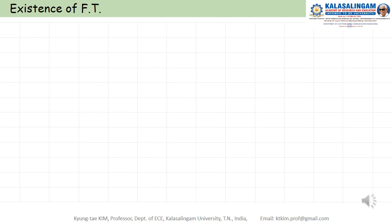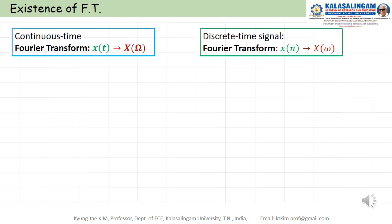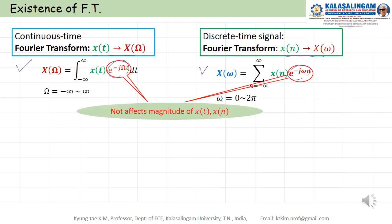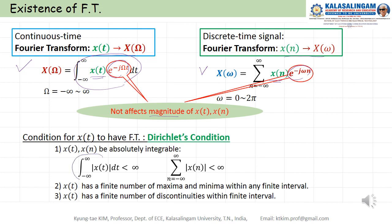Now, the existence of the Fourier transform. In the case of the Fourier transform, and in the discrete case, the formula is as shown. Pay attention to the exponential term — this term does not affect the magnitude. Therefore, in order for this term to converge, we need certain conditions. For the transform to converge and have some finite value, we need the signal to not diverge.